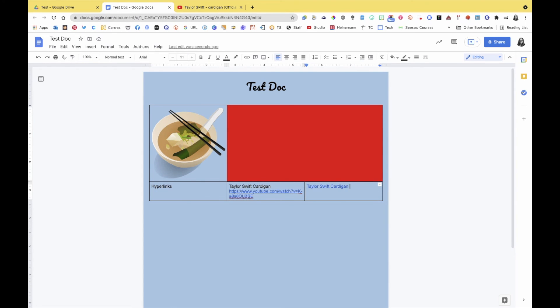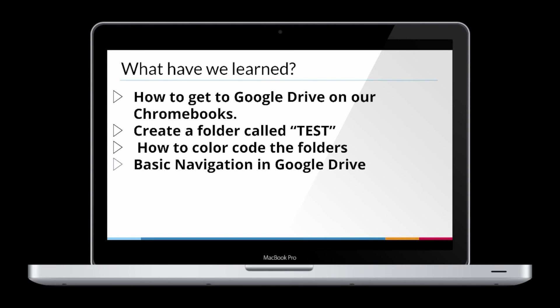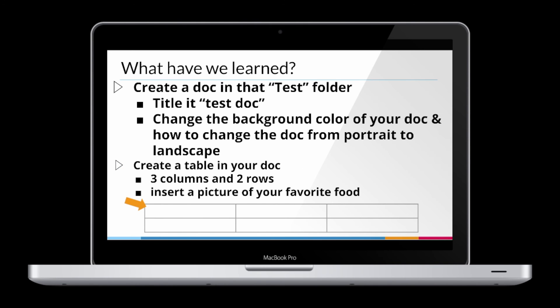I'm going to stop the video here. You've learned how to get to Google Drive on your Chromebook, how to create a folder called Test, how to color-code that folder and add emojis when you rename it, and basic navigation in Google Drive. You've also learned how to create a doc in that test folder, title it 'Test Doc,' change the title font and explore fonts, change the background color of your document, and change the doc from portrait to landscape.